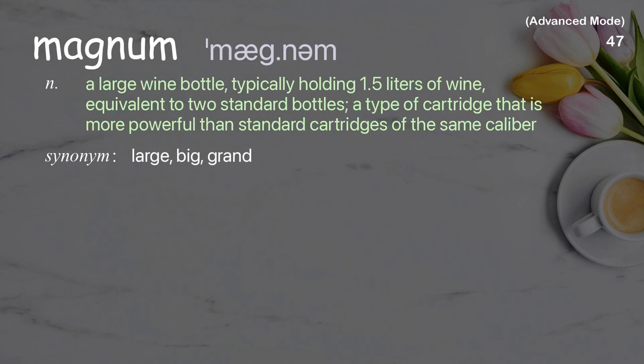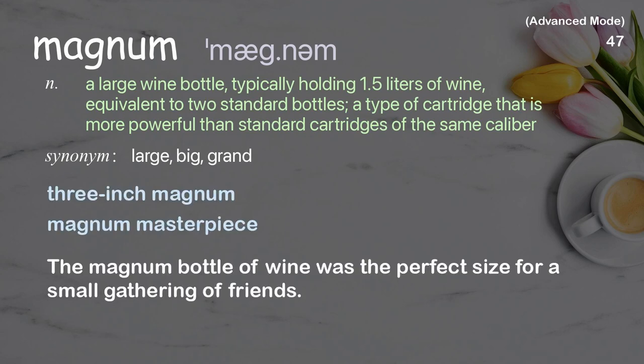Magnum: A large wine bottle, typically holding 1.5 liters of wine, equivalent to two standard bottles; also a type of cartridge that is more powerful than standard cartridges of the same caliber. The magnum bottle of wine was the perfect size for a small gathering of friends.